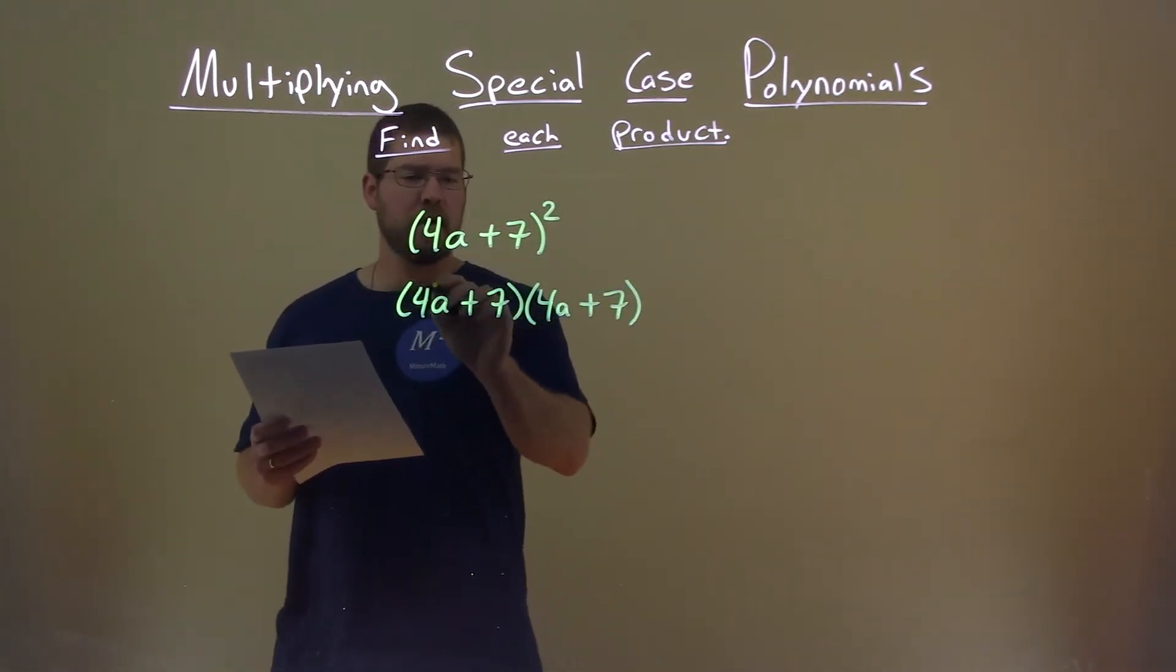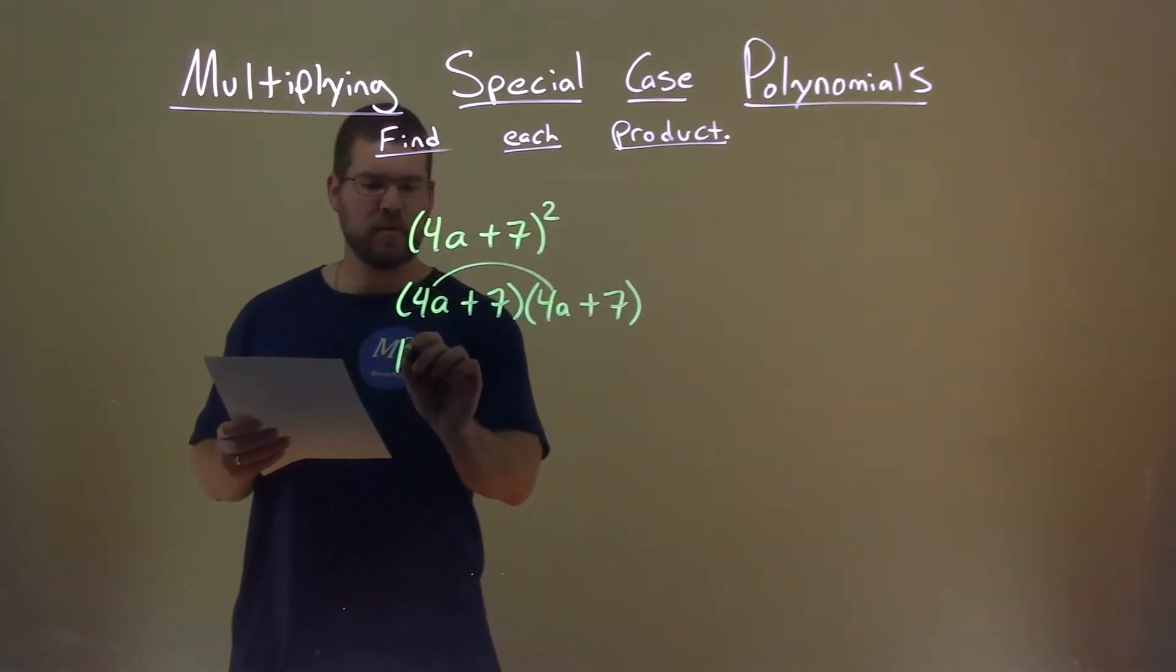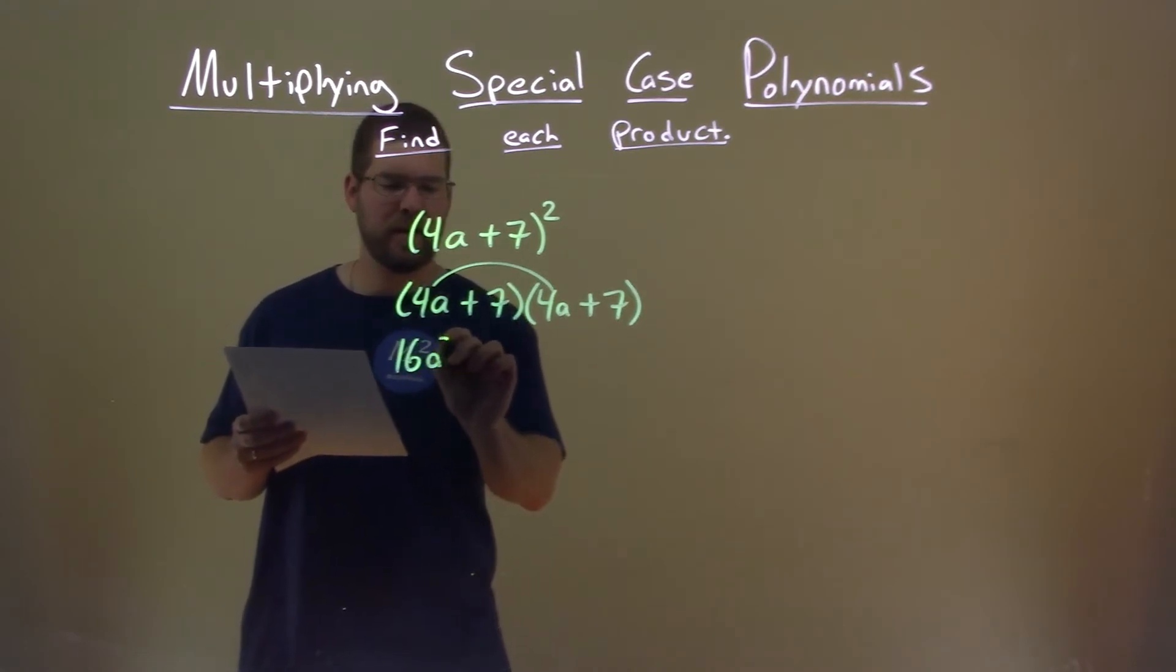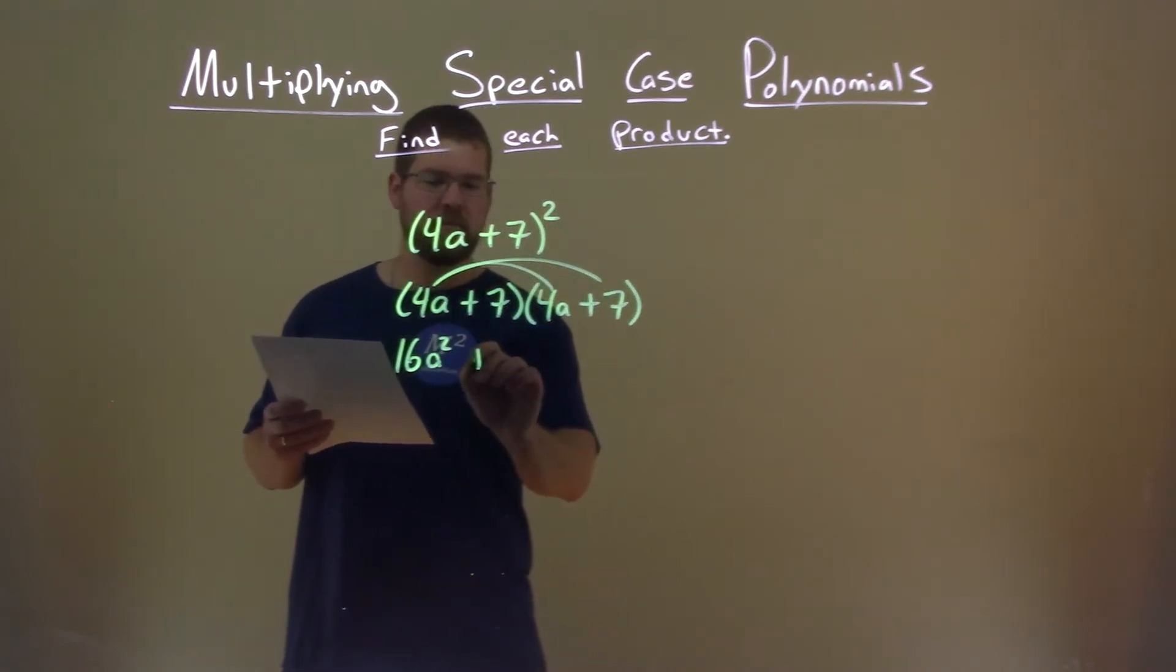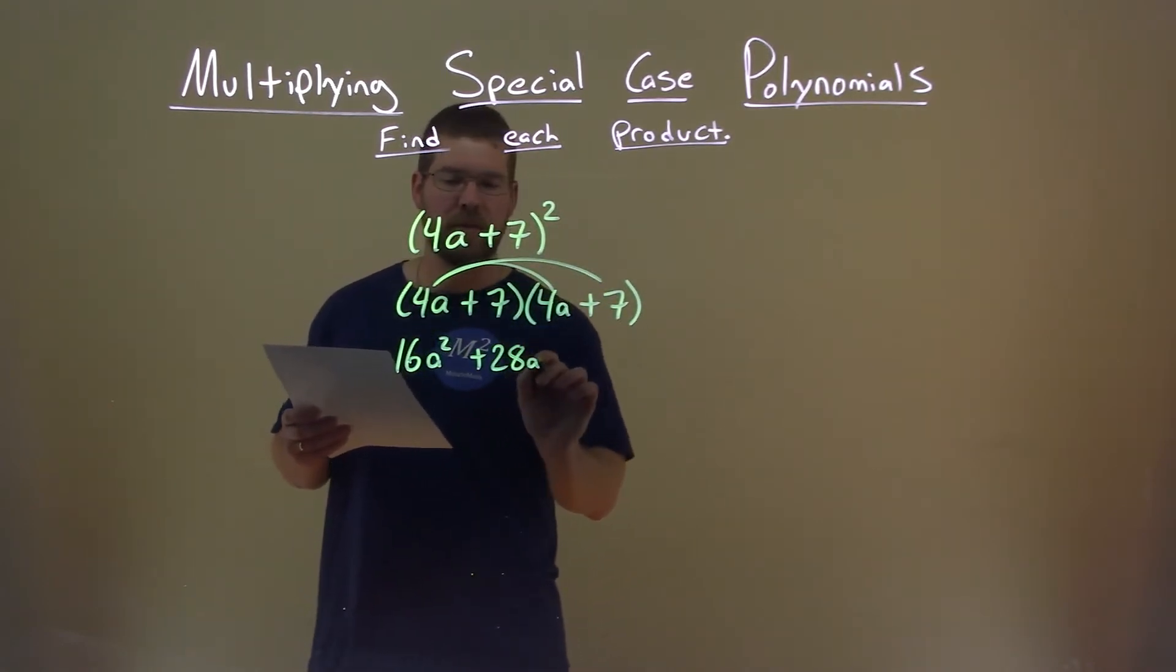4a times 4a, well, that's 16. 4 times 4 is 16, 16a squared. What's 4a times 7? 4 times 7 is 28, but don't forget the a.